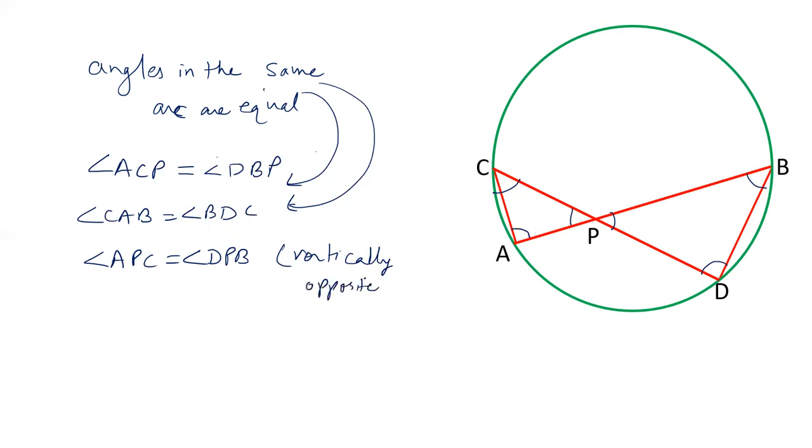So we are basically proving the two triangles similar. So here we have two triangles. Triangle APC is similar to triangle DPB. Remember, we are writing APC and DPB, not DPB, because angle A is equals to D and angle C is equals to B. So APC and DPB are similar triangles.